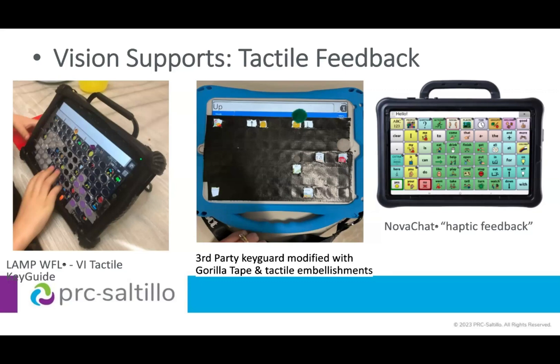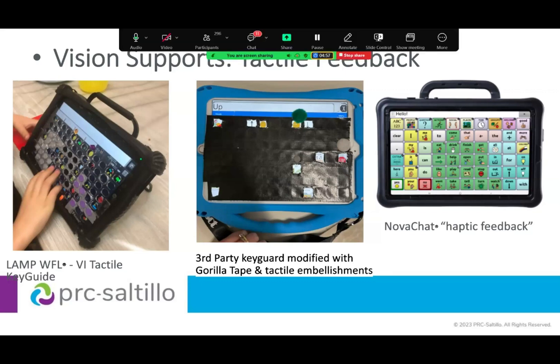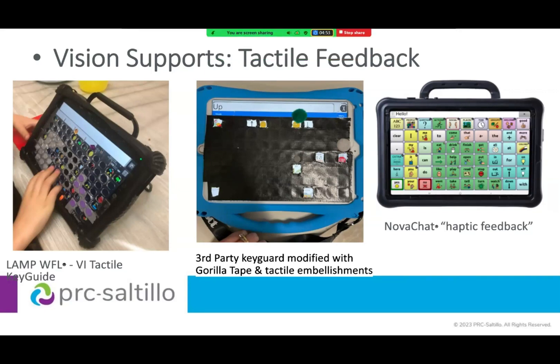Thinking about how to embellish tactile feedback on a key guard: the picture on the left shows a system where a mom glued small plastic shapes to her son's device, which was divided into quadrants. This little boy was completely blind, and she also provided texture from the backside of the touch guard — one circle was fuzzy, one was scratchy, and one was smooth. So as he was tactically orienting on the device, he had a grid configuration with additional tactile embellishments.